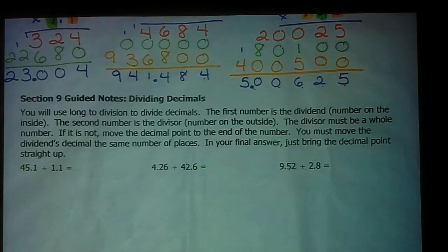Basically, you're just going to use long division to divide decimals. The first number is the dividend, which means the number on the inside of the division sign. The second number is the divisor, the number on the outside. The divisor has to be a whole number in order to use this long division. If it's not a whole number, you simply move the decimal point to the end of the number and move the dividend's decimal the same number of places. In your final answer, just bring the decimal point straight up.